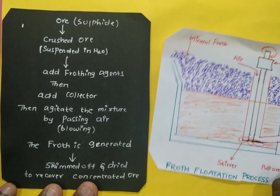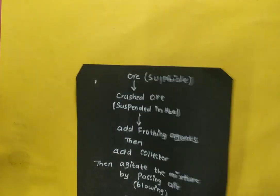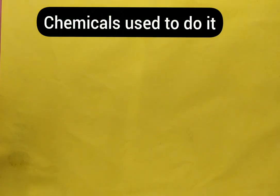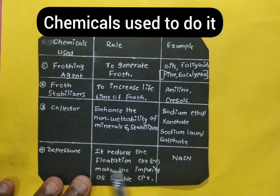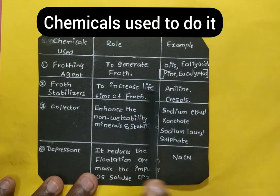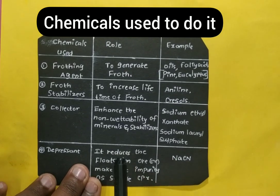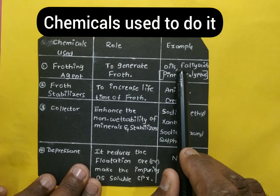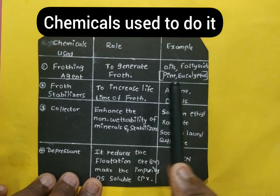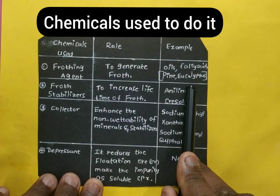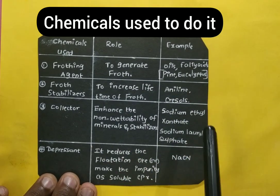Now, what chemicals are used in this process? The first is the frothing agent. Its role is to generate froth. Generally, oils and fatty acids are used — particularly pine oils and eucalyptus oils — as frothing agents.